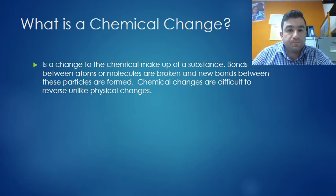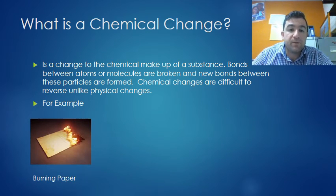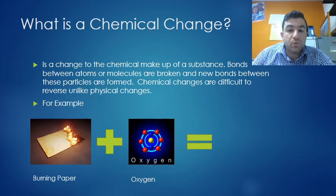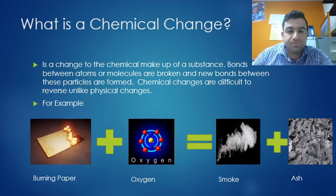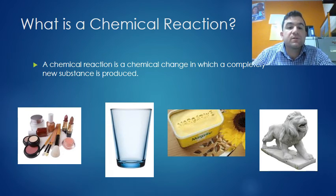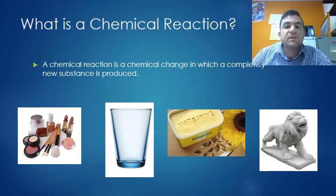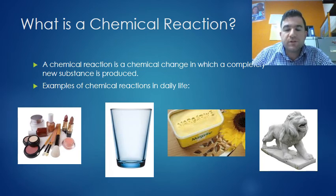What is a chemical change? A chemical change is a change to the chemical makeup of a substance. Bonds between atoms or molecules are broken, and new bonds between these particles are formed. Chemical changes are difficult to reverse, unlike physical changes. For example, burning paper can't be reversed. If we burn the paper and add oxygen to it, we've got a new substance: smoke and ash. We can't go backwards - we've got a completely new substance. We don't have paper anymore, we have ash. What is a chemical reaction? A chemical reaction is a chemical change in which a completely new substance is produced. We require chemical reactions to get cement, margarine, glass, makeup. We're getting completely new substances - we're mixing elements and compounds together to create chemical reactions to get new things.